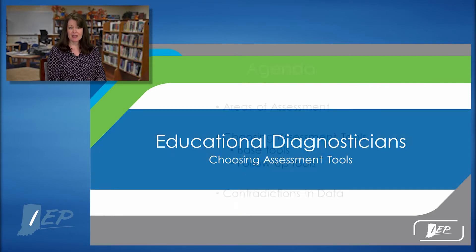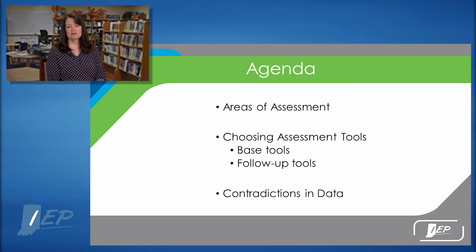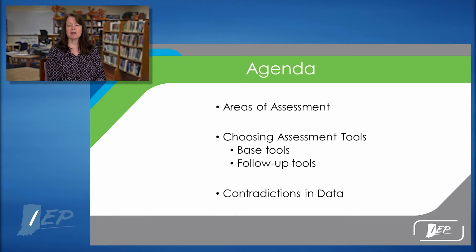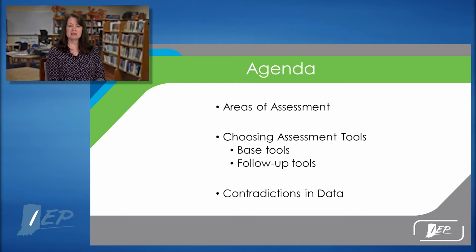Our agenda today: we're going to start with looking at those different areas of assessment that are required for different disability areas. Then we're going to talk about choosing assessment tools — both the base tools that we tend to use and then digging deeper with any follow-up tools that are needed. Finally we'll look at those contradictions in data, how to account for them, how to write them up, and what those kinds of differences and trends might mean.